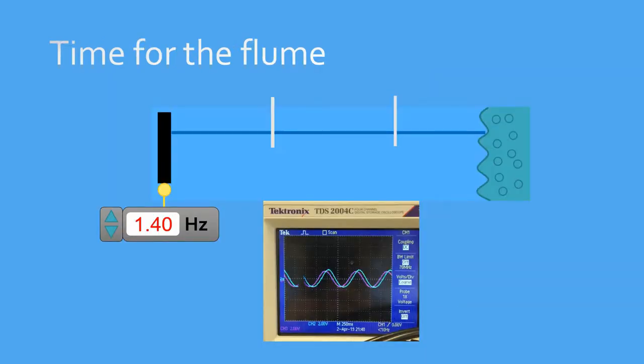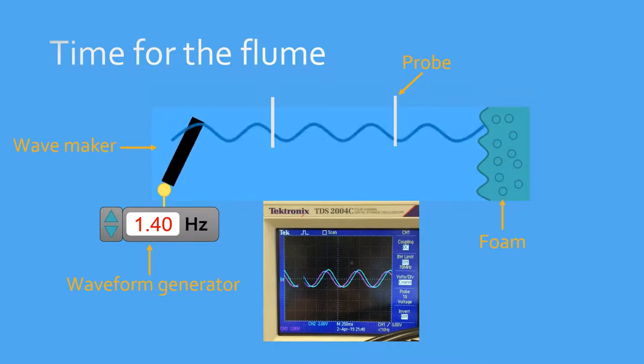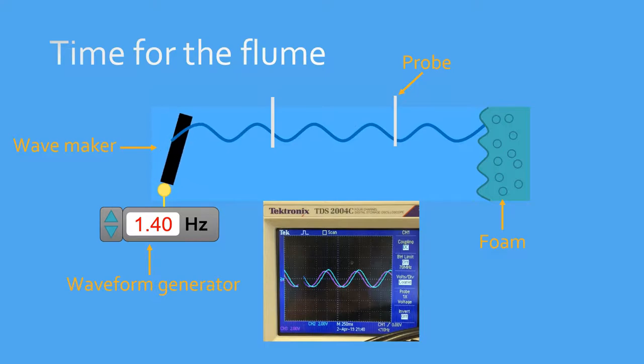Before I begin to show you the results from the flume, I will explain the setup. The flume is long and here is just an illustration of the main components. We have the wave maker on the far end that creates a wave with a frequency that is determined by a waveform generator. The probes are used to obtain the waveform which is displayed on an oscilloscope.